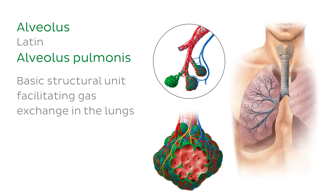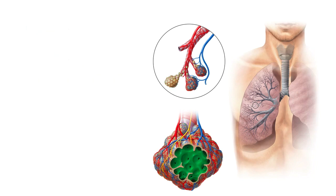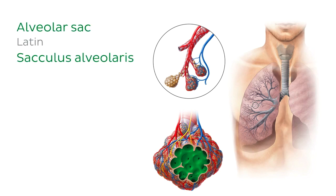This is why the alveoli are surrounded by a rich network of blood vessels, but we'll get to that a little later. Many alveoli open up internally to a space called the alveolar sac, and this is the space we can now see highlighted in green. The alveoli and alveolar sacs mark the end of the respiratory tract.